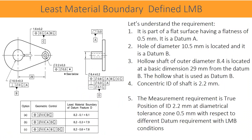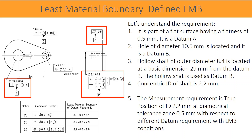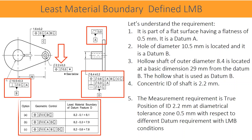Let's understand the next requirement. It is a part with a flat surface having a flatness of 0.5 millimeters; it is datum A. A hole of diameter 10.5 millimeters is located and it is datum B. A hollow shaft of outer diameter 8.4 is located at a basic dimension of 29 millimeters from datum B; the hollow shaft is used as datum D. The concentric ID of the shaft is 2.2 millimeters. The measurement requirement is true position of ID 2.2 millimeters at a diametrical tolerance zone of 0.5 millimeters with respect to different datum requirements — with Least Material Boundary (LMB) conditions.